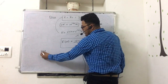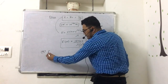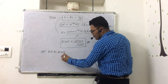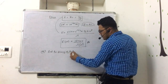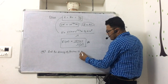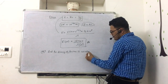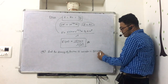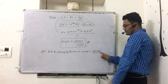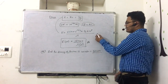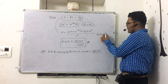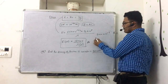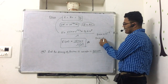For example, you have a question: find the energy of a photon if the wavelength is 50 Angstroms. Use the formula E = hC/λ to solve for the energy of the photon.